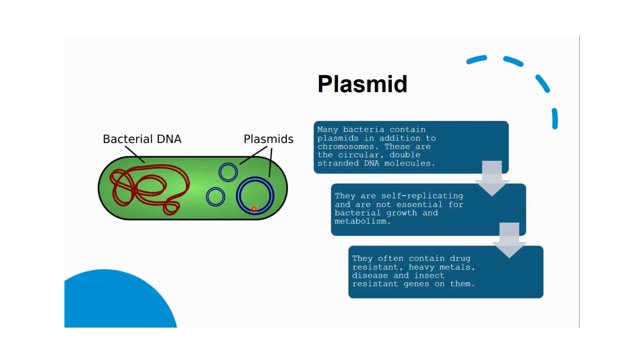That's why plasmids are generally used for transformation of genes from one organism to another. Plasmids may be used as vectors or carriers for transportation or transformation of specific genes of interest to other organisms using the whole bacterium.